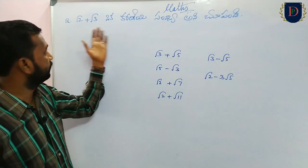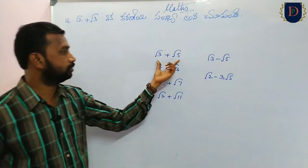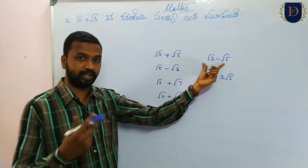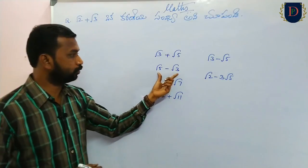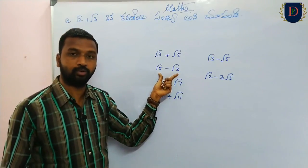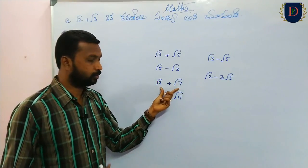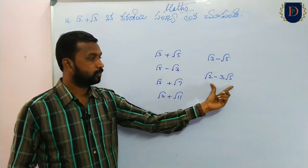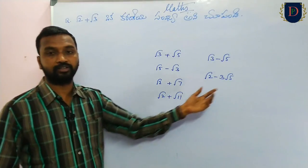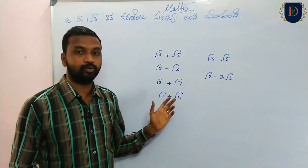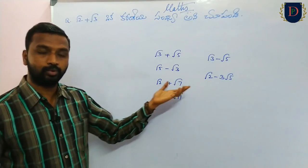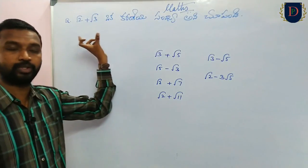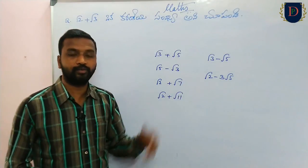For public exams, you may get root 2 plus root 3, root 3 plus root 5, root 3 minus root 5, root 5 minus root 3, root 2 plus root 7, root 2 plus root 11, root 2 minus root 5. Same base model is root 2 plus root 3.